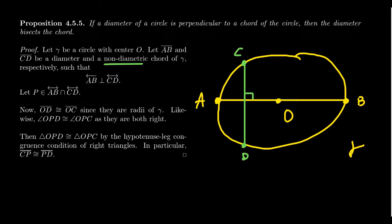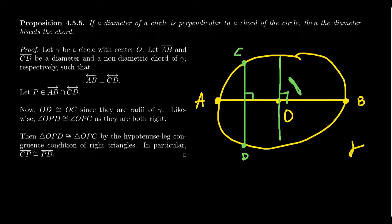Why assume the chord is non-diametric? If it were a diameter, that's a trivial case: the center O is the midpoint of every diameter, so two diameters intersecting each other automatically bisect each other — you don't even need the right angle hypothesis. We fixate on the non-diametric chord because we don't necessarily know where its midpoint is.